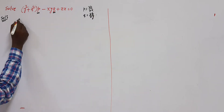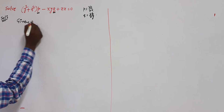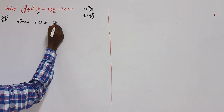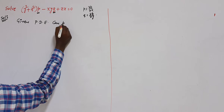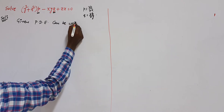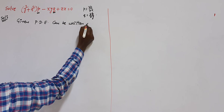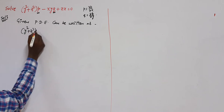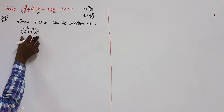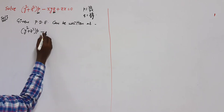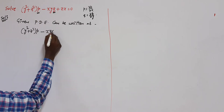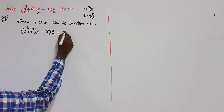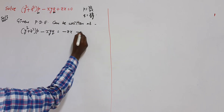So, the given partial differential equation can be written as a PDE. Writing it out: (y² + z²)·p, then the second term as usual, and taking the last term to the right side, you get minus zx. Take this as equation number 1.